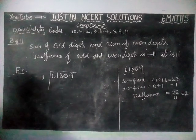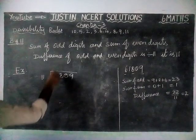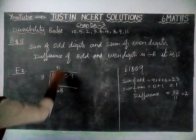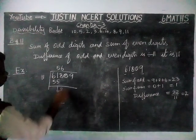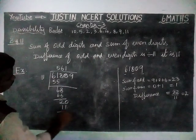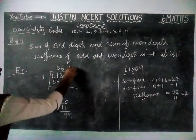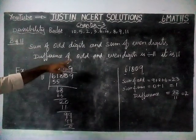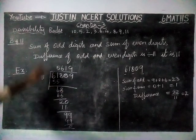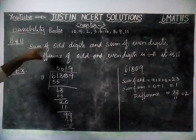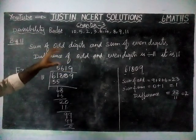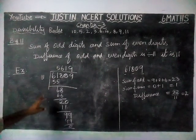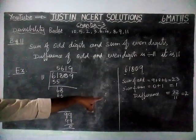Now we are going to check that by dividing by 11. In 61, five 11s are 55, remaining 6. Now we have taken 68: six 11s are 66, remaining 2. This 0 we have taken. Only one 11 is 11, remaining 9. This 9 we have taken: nine 11s are 99. So the given statement is true. When the difference of odd digits and even digits is divisible by 11, the given number is divisible by 11. We saw both examples: one not divisible by 11, and one which is divisible by 11.